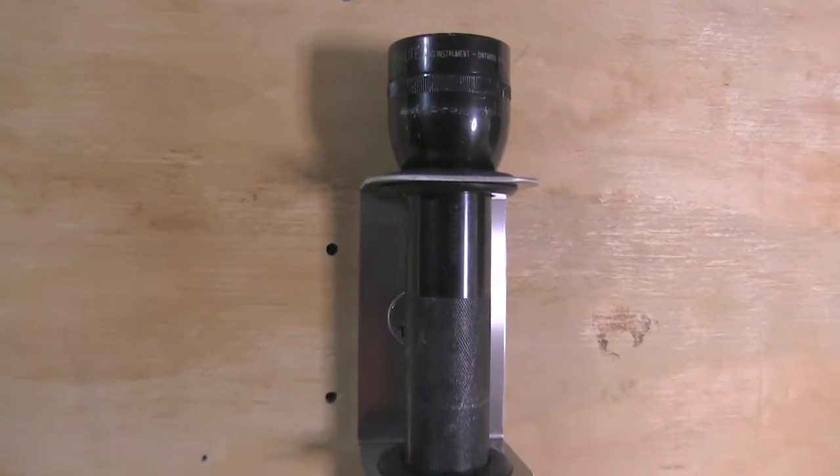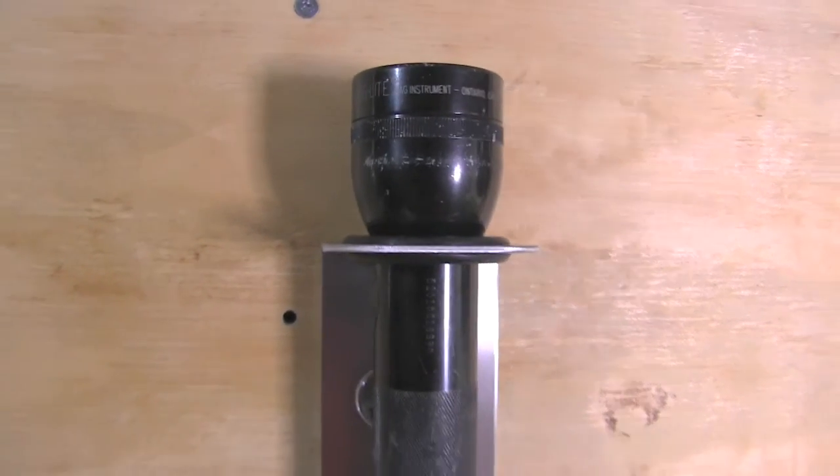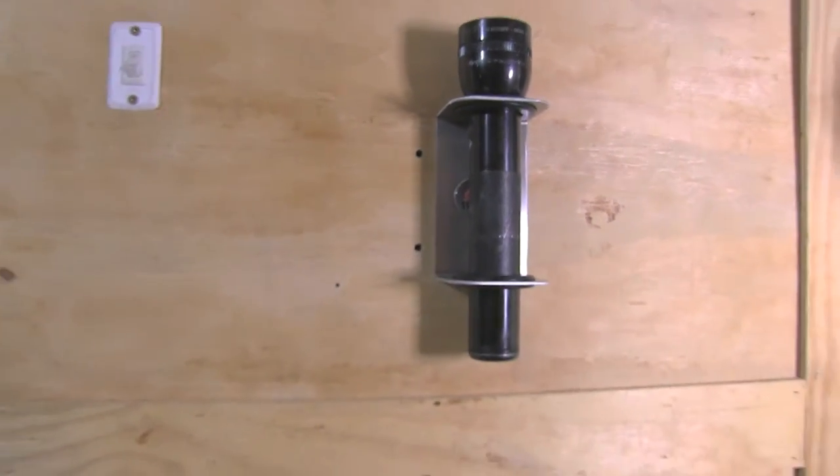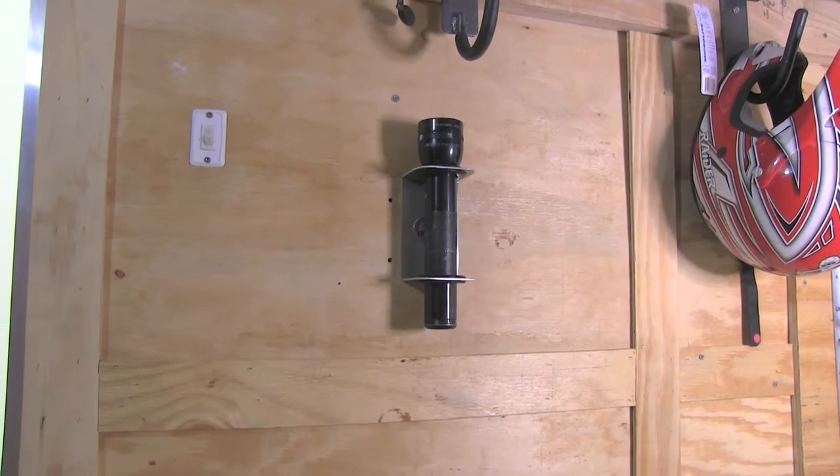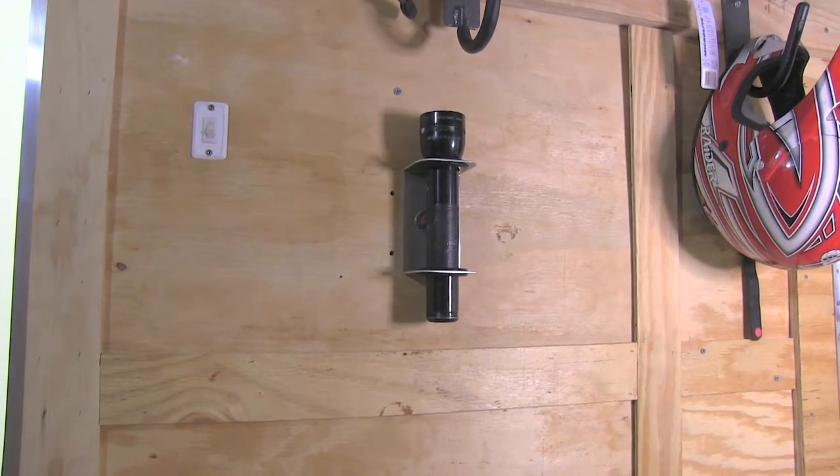The flashlight hanger is made of aluminum, so it does give it a nice appearance. It does have a 5 and 3 sixteenths tall dimension by 3 inches wide and 3 inches deep.